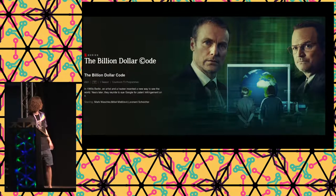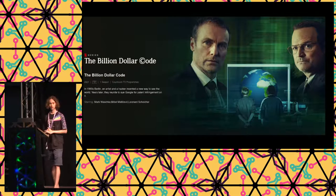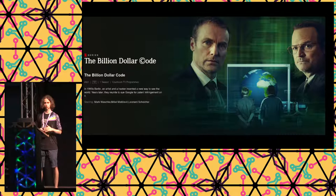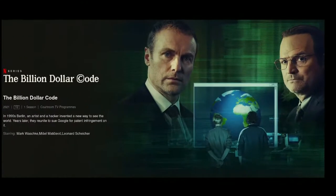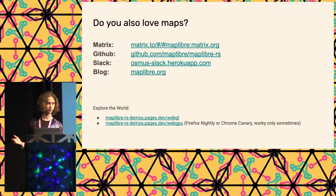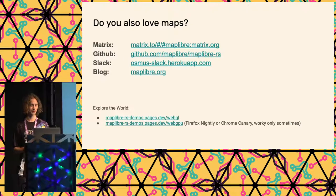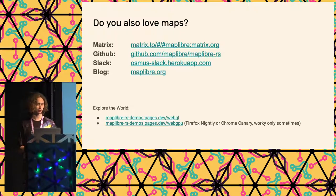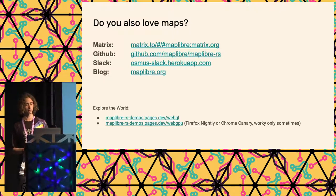A quick recommendation for a series: I already talked about TerraVision in the beginning. The Billion Dollar Code is a series on Netflix — there was a patent dispute between Google and TerraVision, and the series explains what happened in a very emotional way. It's definitely worth watching. So if you also love maps, feel free to check out the project — there's a lot to do, it's a project without end. We have a Matrix channel, and there's also Slack where the MapLibre community hangs out. Also feel free to try out a web demonstration. If you're feeling adventurous, you can try out a WebGPU implementation, but that of course requires Firefox Nightly and you have to set some special feature flags.